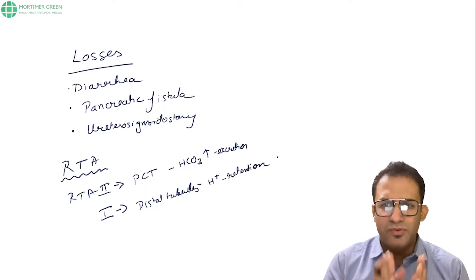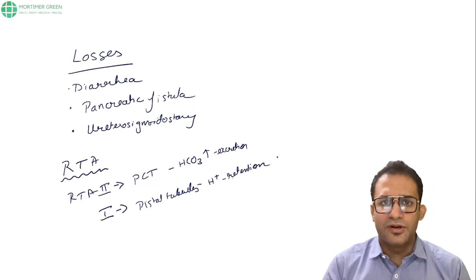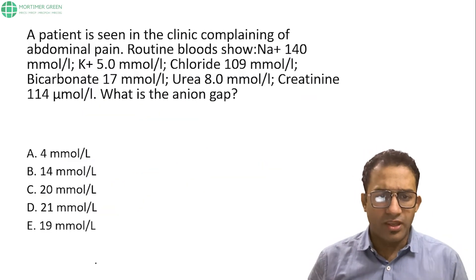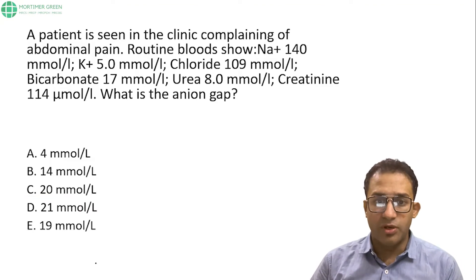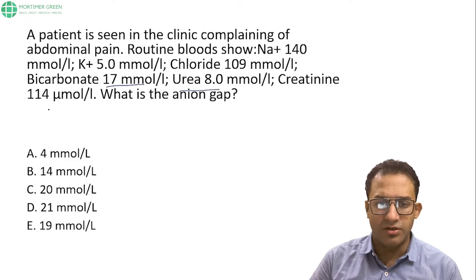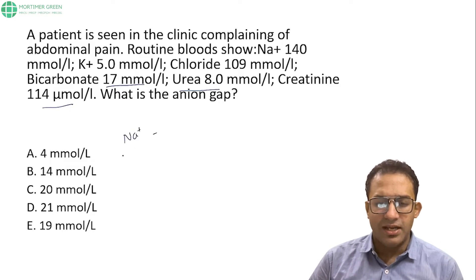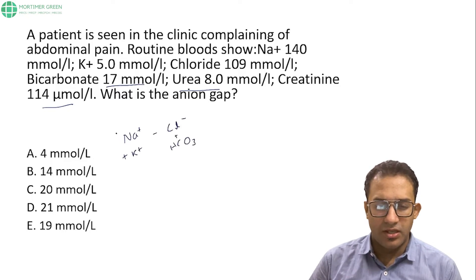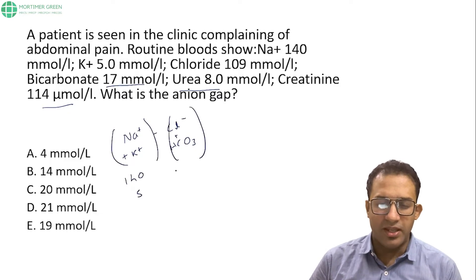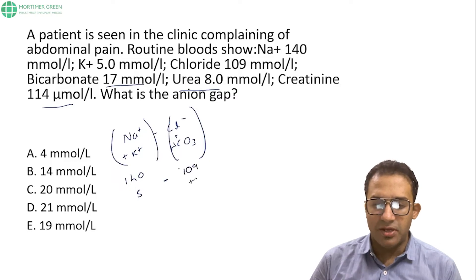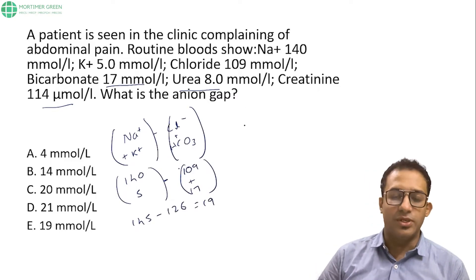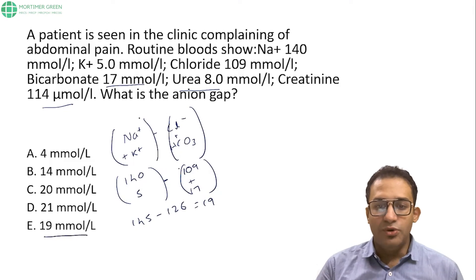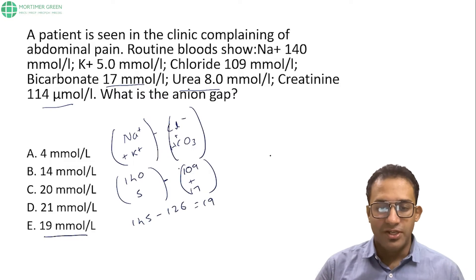Now let's look at a clinical question on anion gap. A patient presents with abdominal pain. Blood tests show: sodium 140, potassium 5, chloride 109, bicarbonate 17. The bicarbonate is low, indicative of acidosis. Urea 8 mmol/L, creatinine 114 micromol. The anion gap is calculated as (140 + 5) − (109 + 17) = 145 − 126 = 19 mmol/L. Creatinine and urea are decoys. The answer is 19 mmol/L, which is in the high anion gap range.